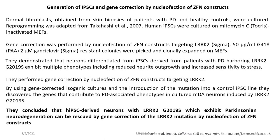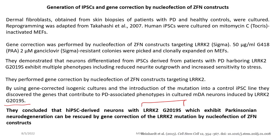Using gene-corrected isogenic cultures and the introduction of the mutation into a control IPSC line, they discovered the genes that contribute to Parkinson's disease-associated phenotypes in cultured MDA neurons induced by LRKK2 G2019S. They concluded that human induced pluripotent stem cell-derived neurons with LRKK2 G2019S, which exhibit Parkinson's neurodegeneration, can be rescued by gene correction of the LRKK2 mutation by nucleofection of ZFN constructs.